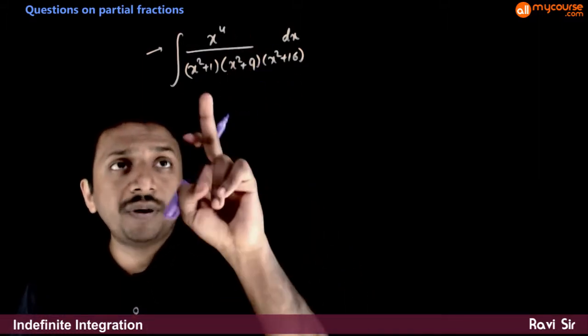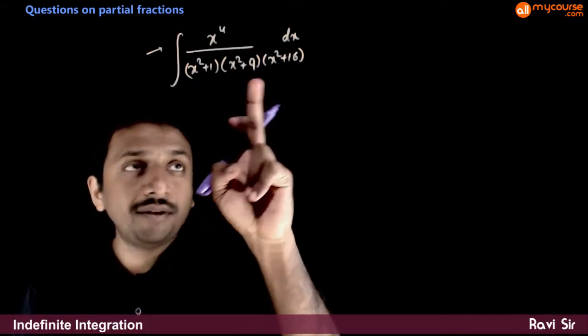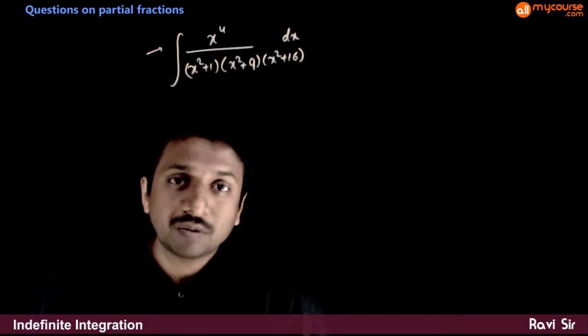In this question, you are asked to integrate x to the power 4 by x square plus 1 times x square plus 9 times x square plus 16.